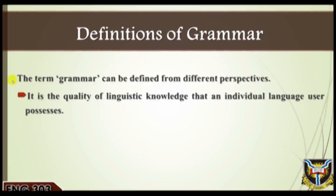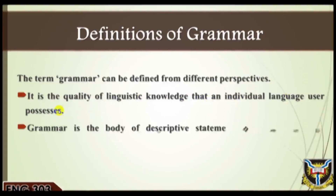Definitions of grammar: The term grammar can be defined from different perspectives. One: it is the quality of linguistic knowledge that an individual language user possesses. This knowledge is innate, because every normal person is born with the ability to speak a particular language. In addition, individuals — especially toddlers — do not go to school to learn their mother tongues before they start speaking their indigenous languages.